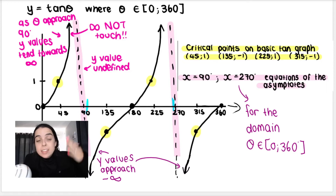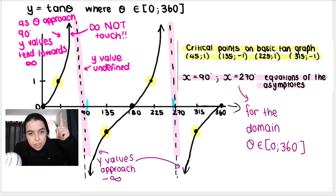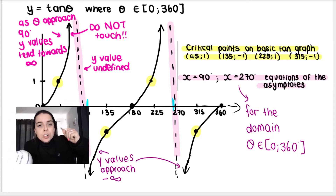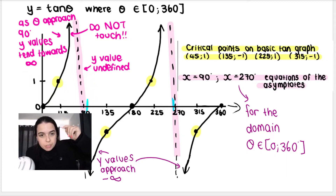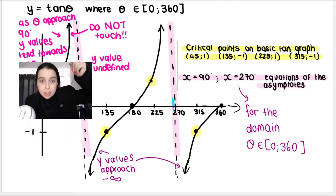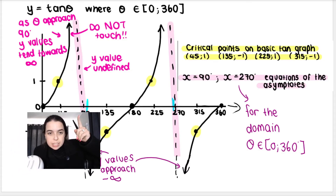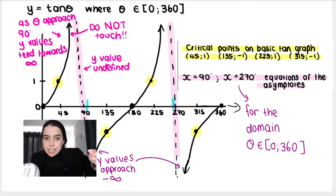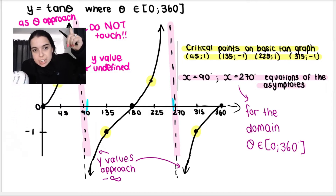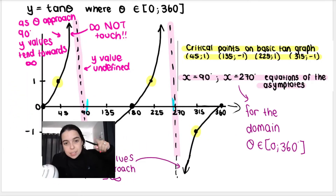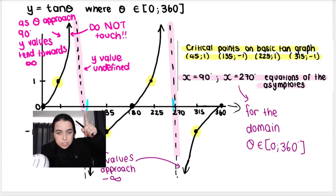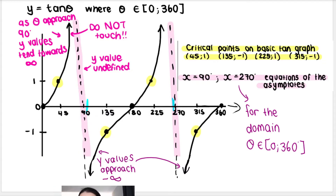What the asymptote means: as my x values approach the asymptote — so if theta is 45, tan 45 is 1. If I do tan of 50, it would be bigger than 1. Tan of 60 would be bigger still, all the way to tan of 90, which is undefined. As theta approaches 90, so as theta gets closer and closer to 90, my y values tend towards negative infinity. And the same thing: as theta approaches 90 from the other side, my y values approach negative infinity.